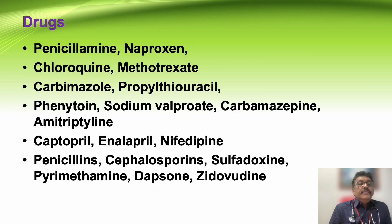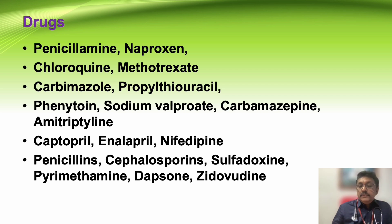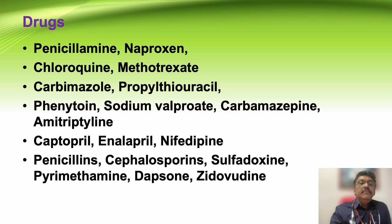Many drugs can produce neutropenia, including penicillamine, naproxen, chloroquine, methotrexate, carbimazole, propylthiouracil (antithyroid drugs), phenytoin, sodium valproate, carbamazepine, amitriptyline (anti-epileptic drugs), captopril, enalapril, nifedipine (antihypertensives), and antibiotics like penicillin, cephalosporin, sulfadoxine, pyrimethamine, dapsone, and zidovudine. This list is not complete — many other drugs can also produce neutropenia.